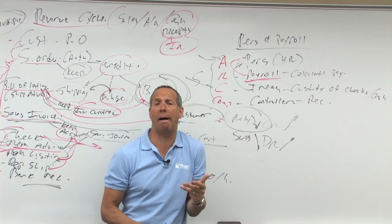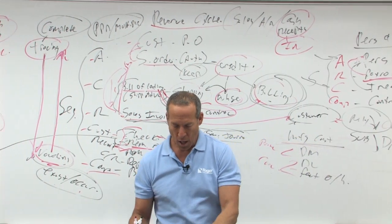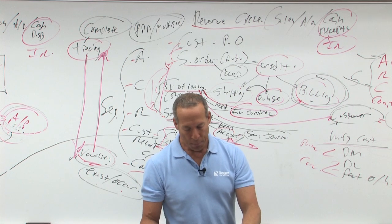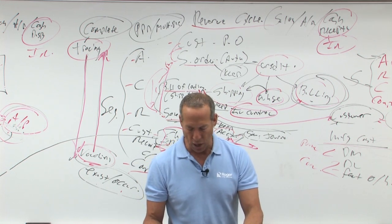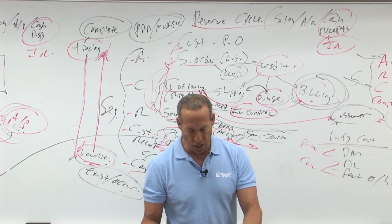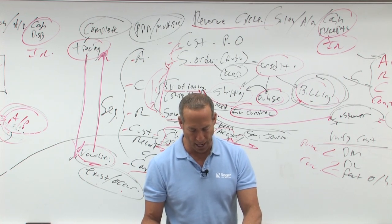A, authorization of transactions from custody. Yeah. B, operational responsibility from record keeping. No. Human resources from controllership. No. Administrative controls from internal. No. Best answer A.